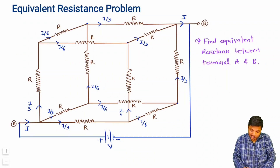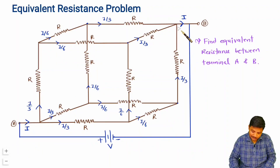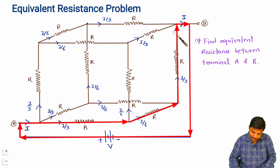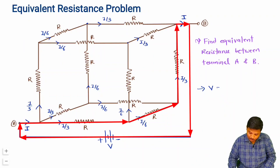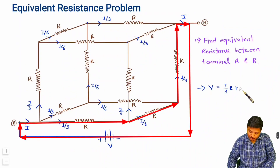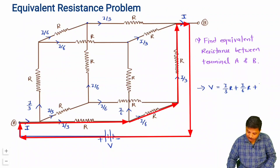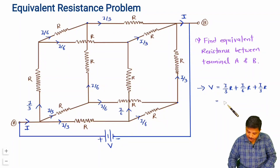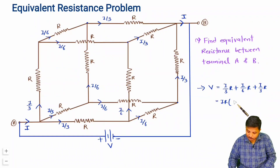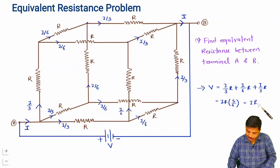To calculate equivalent resistance, take any shortest path from A to B. Along that path: V = (I/3)·R + (I/6)·R + (I/3)·R. Taking IR as common: 1/3 + 1/6 + 1/3 = 2/3 + 1/6 = 5/6. So V = (5/6)·I·R.